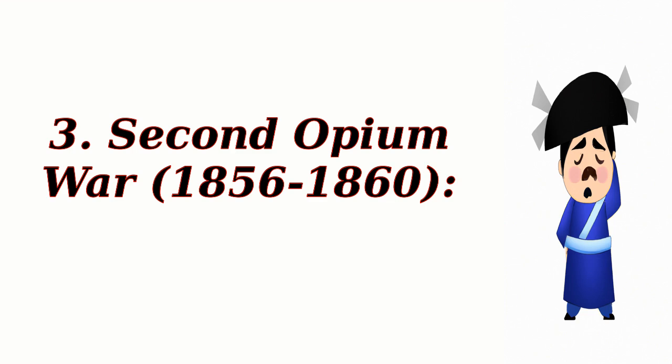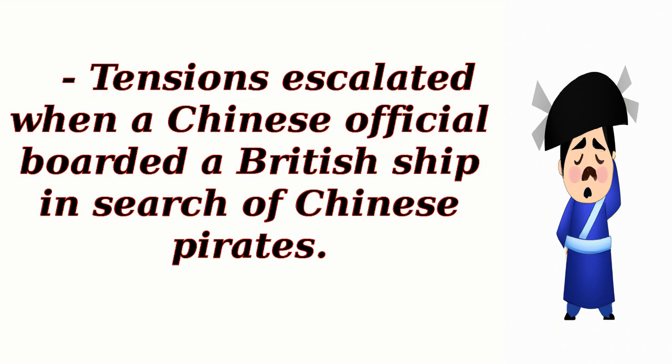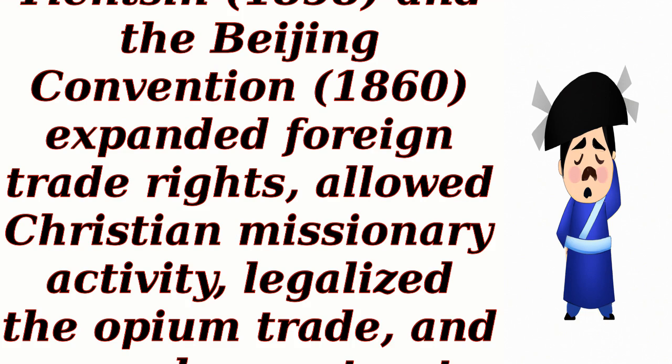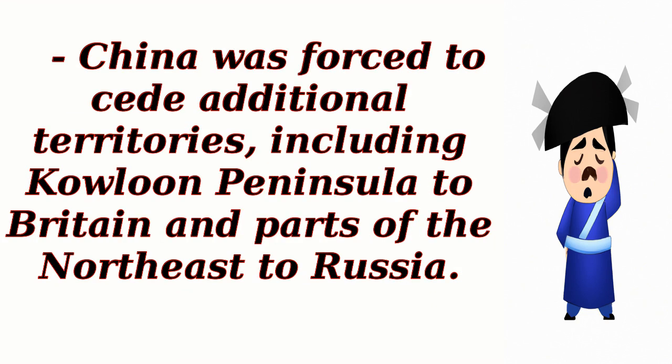Second Opium War, 1856–1860: Tensions escalated when a Chinese official boarded a British ship in search of Chinese pirates. British and French forces launched a joint military campaign, capturing Beijing in 1860. The Treaty of Tientsin, 1858, and the Beijing Convention, 1860, expanded foreign trade rights, allowed Christian missionary activity, legalized the opium trade, and opened more treaty ports. China was also forced to cede additional territories, including the Kowloon Peninsula to Britain and parts of the northeast to Russia.